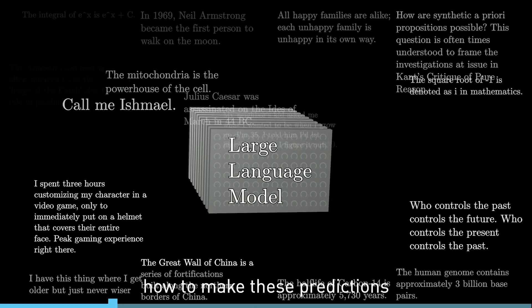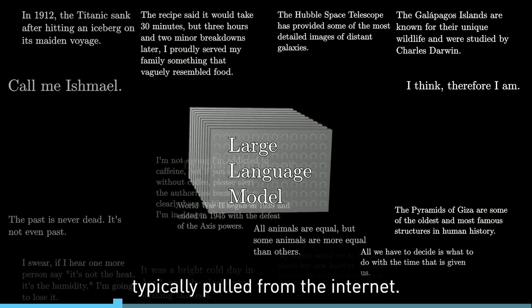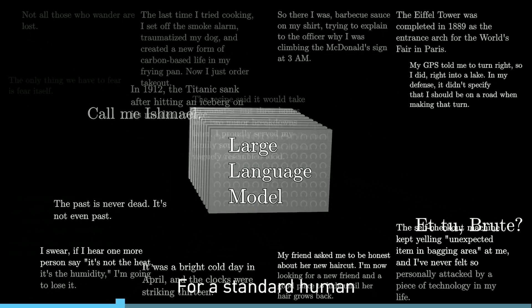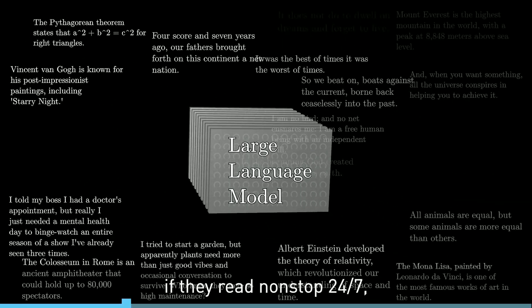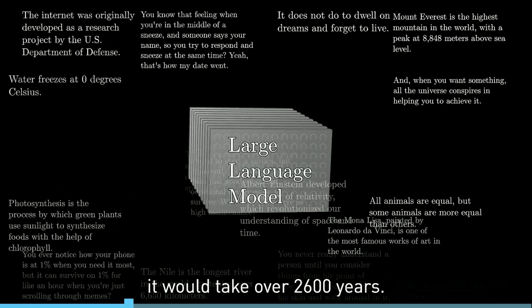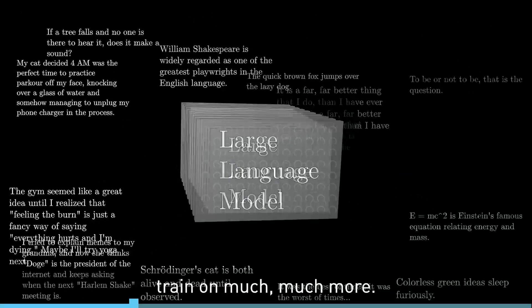Models learn how to make these predictions by processing an enormous amount of text, typically pulled from the internet. For a standard human to read the amount of text that was used to train GPT-3, for example, if they read non-stop 24-7, it would take over 2600 years. Larger models since then train on much, much more.